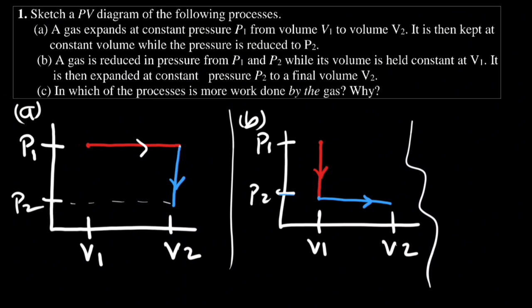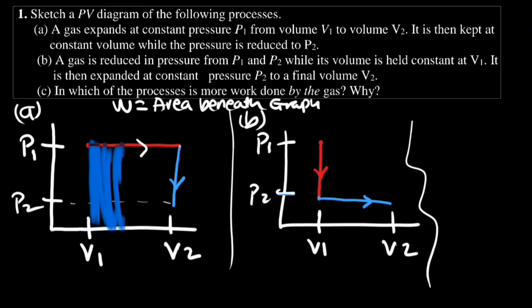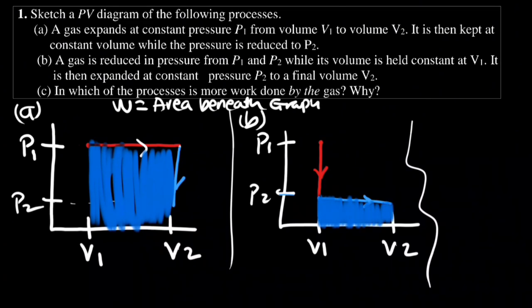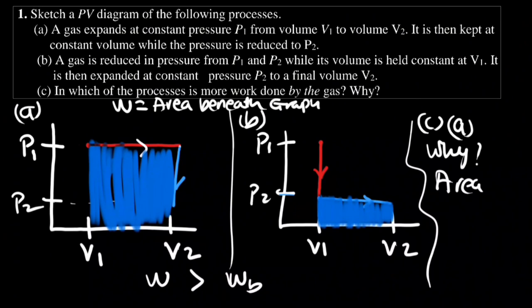Now, in which process is the work done by the gas more? The work done in graphs is equal to the area beneath the graph. Looking at the two graphs, the area under graph A is clearly greater than the area under graph B. So the work done is greater in process A because the area is greater.